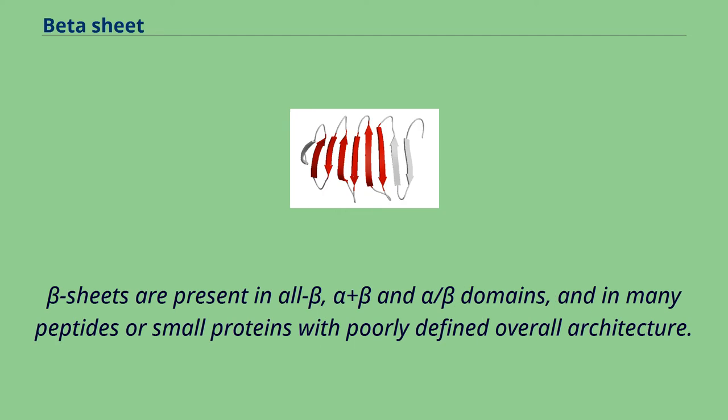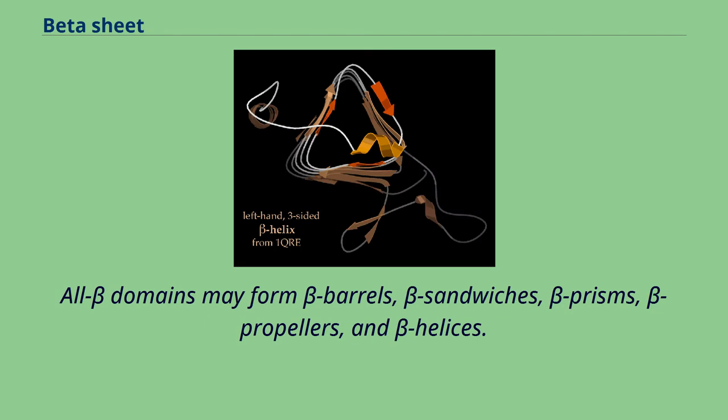Beta sheets are present in all beta, alpha plus beta and alpha beta domains, and in many peptides or small proteins with poorly defined overall architecture. All beta domains may form beta barrels, beta sandwiches, beta prisms, beta propellers, and beta helices.